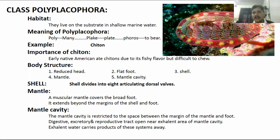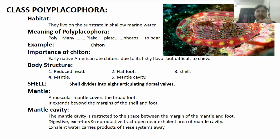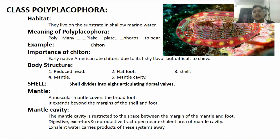If you look at this diagram, this is an example of chiton and its chiton shell. So one, two, three, four, five, six, seven, and eight — these are the different plates present in the shell of Polyplacophora, or you can say the shell of chiton.